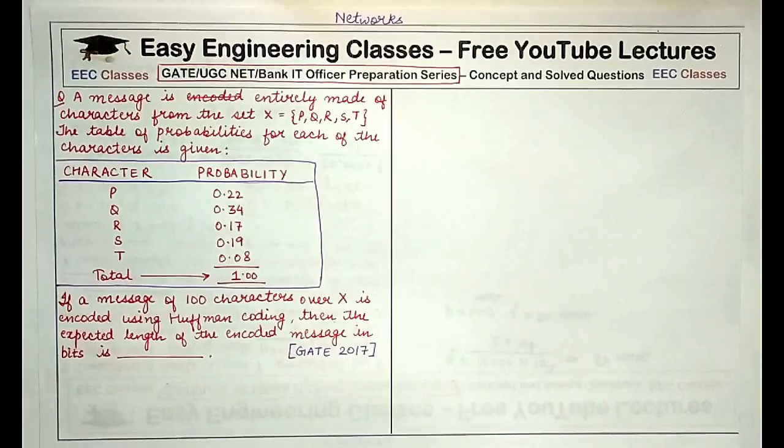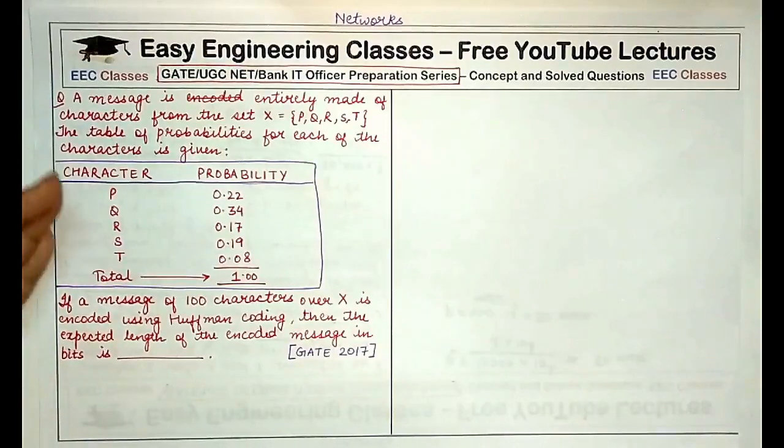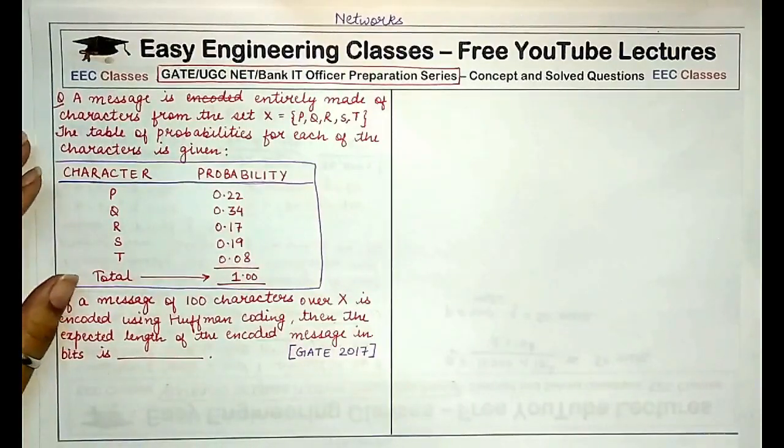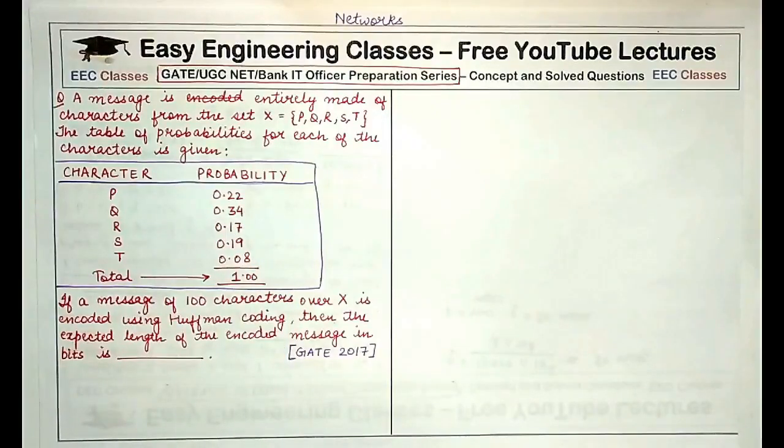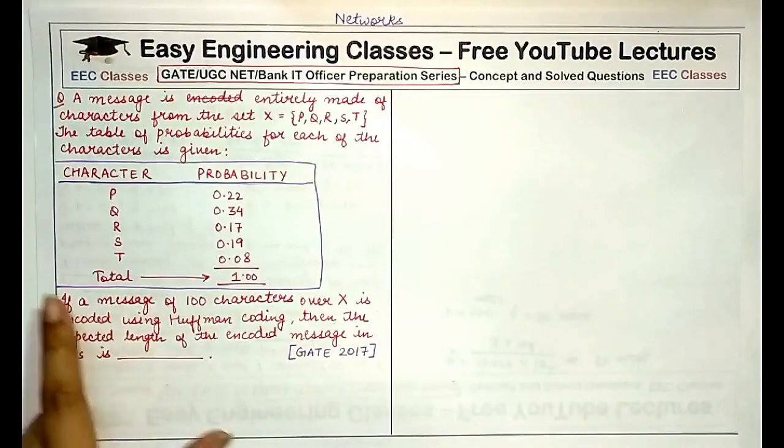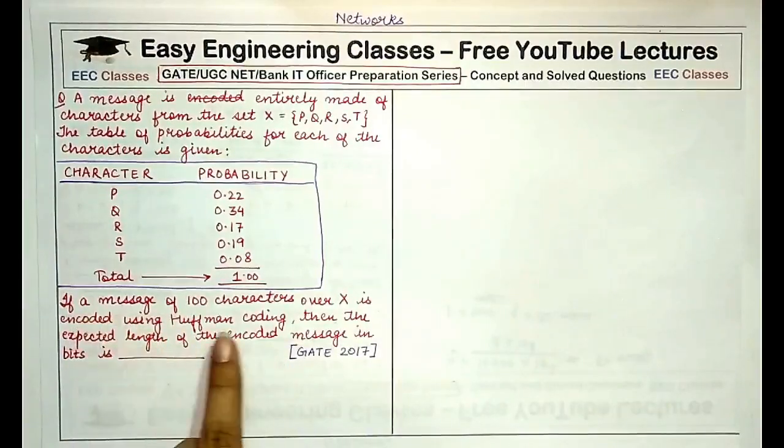Hello everyone, welcome to Easy Engineering Classes. In today's lecture we'll solve a Huffman encoding question from the networks topic. In this question you are given the characters that are used in the message and the probabilities of these respective characters, and you have to find how these characters should be encoded using Huffman coding if a message of 100 characters is to be transmitted.